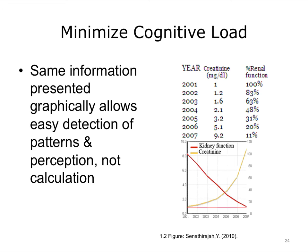Here we have the same information presented both graphically and in table form. On the top is a table showing the patient's creatinine values and renal function over several years. On the bottom are the same values graphed, allowing one to see patterns at a glance. This is why visual display of data is often so important.